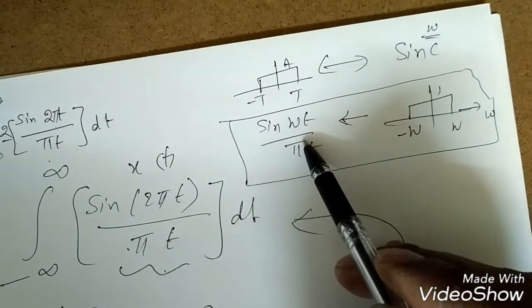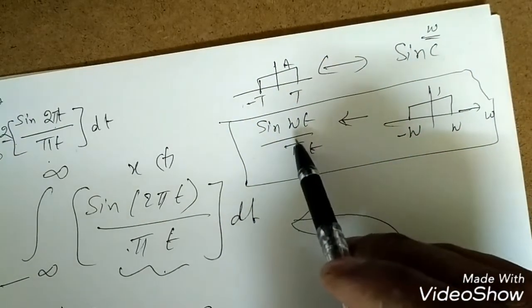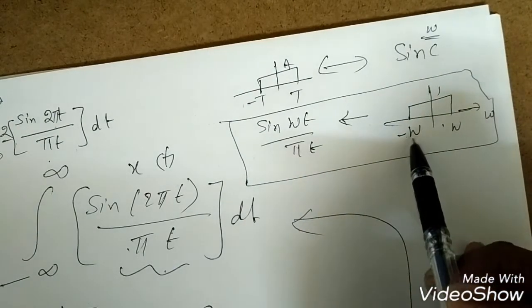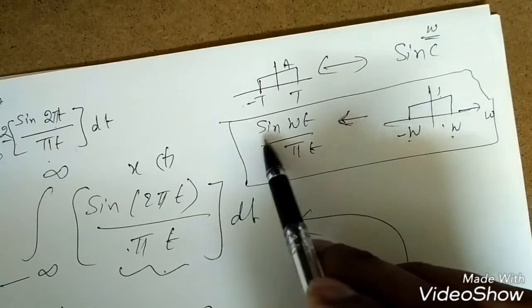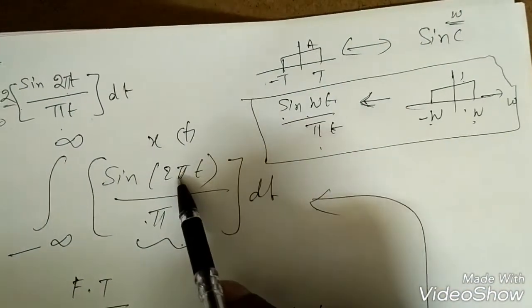When we discuss signals and systems and Fourier transform, I will clearly explain these concepts. But just for now remember: in Fourier domain suppose minus w to w with amplitude of one, in time domain it will become sine(wt) by πt. So what is the w in this?